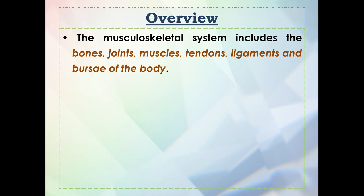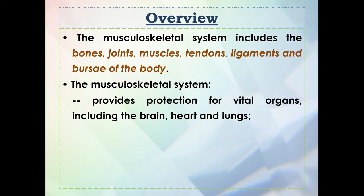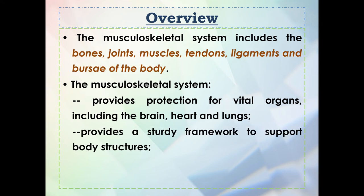For the overview, the musculoskeletal system includes different parts such as bones, joints, muscles, tendons, ligaments, and bursae of the body. The general functions include providing protection for vital organs including the brain, heart, and lungs; providing a sturdy framework to support body structures; and making mobility possible. It is very important in terms of our mobility, posture, and protecting the internal organs.